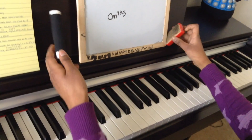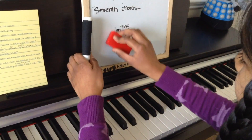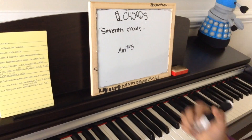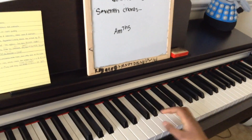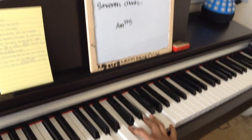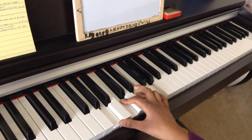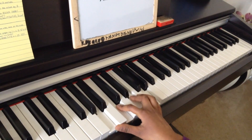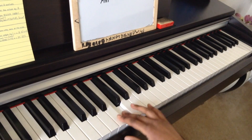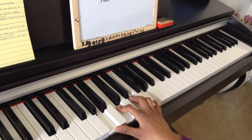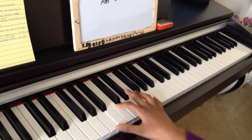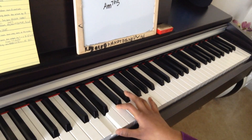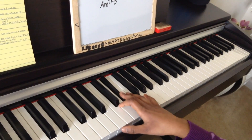Now let's try A minor seven flat five. You have your A minor seven chord and take the fifth note of the scale, then move it down a half step. So you have A, C, E flat, G.